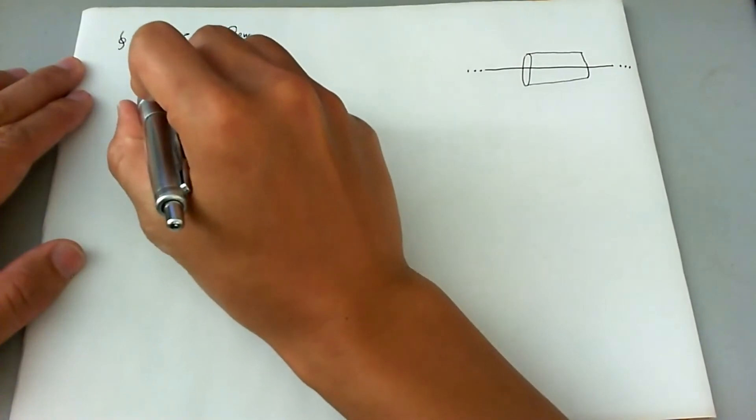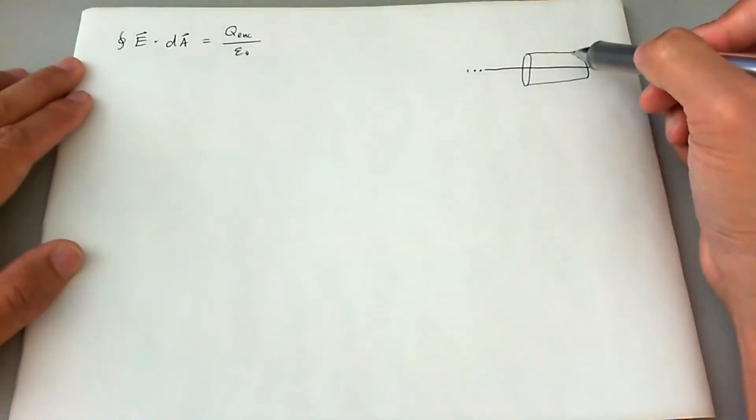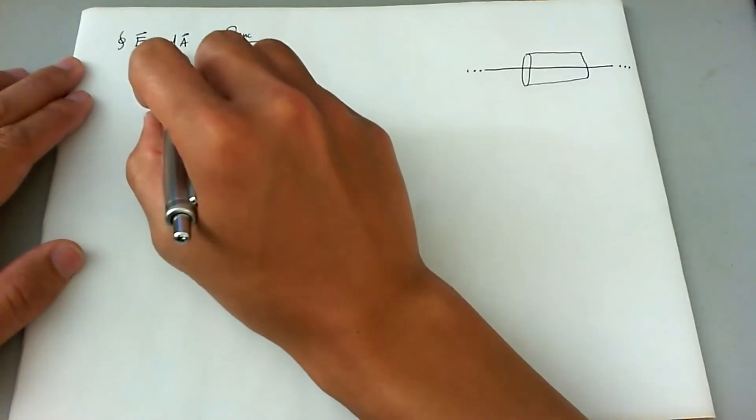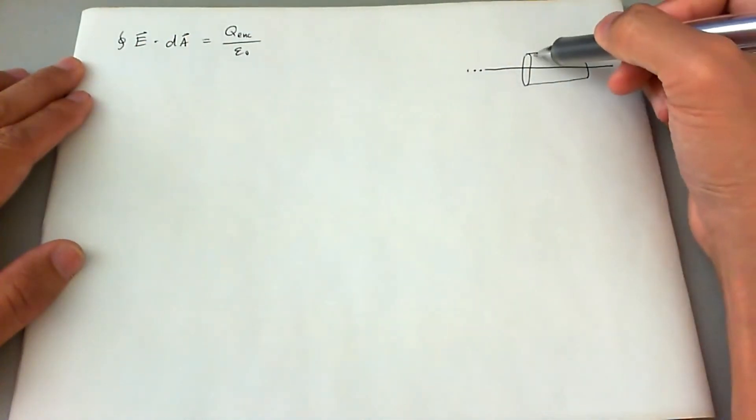Again, we're going to invoke the fact that this problem is symmetrical. E will always be parallel to the area vector of the Gaussian shape, and it does not depend on the particular part of the area within that shape. So E will always remain constant at all points of the area.